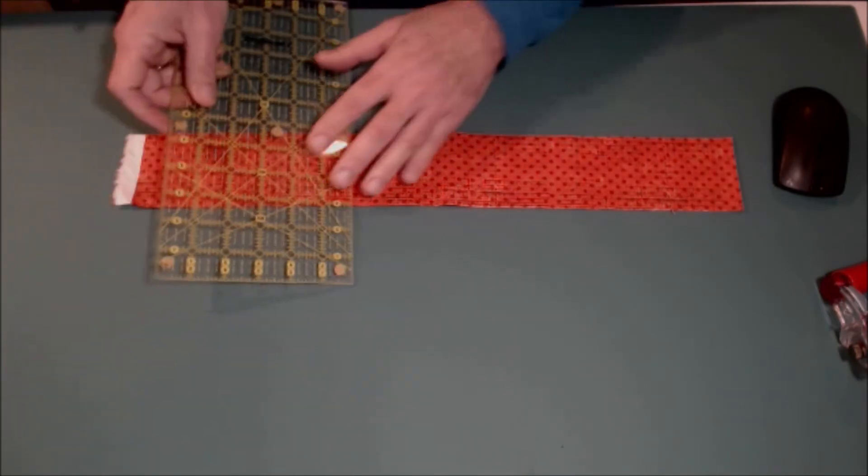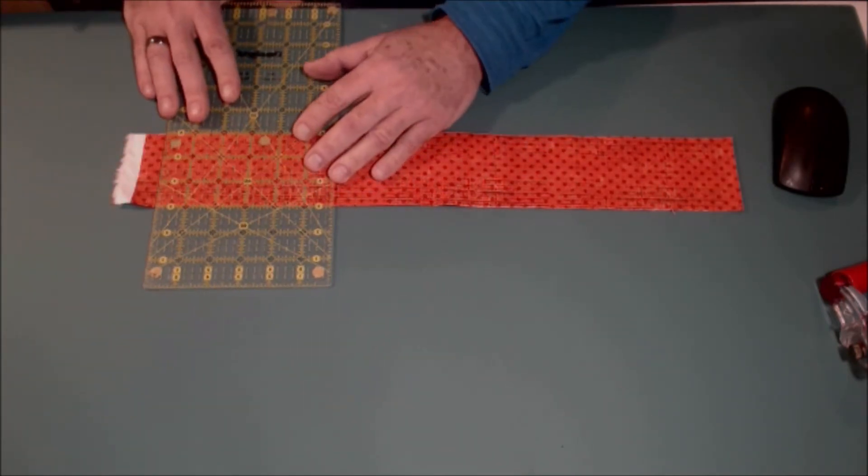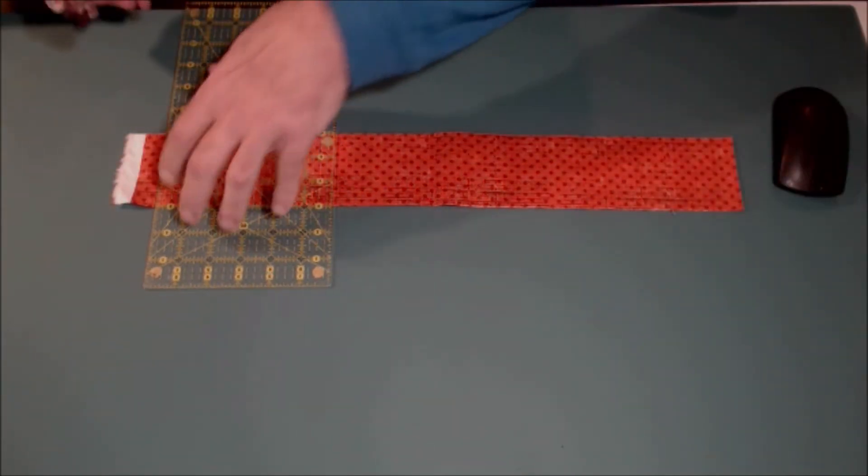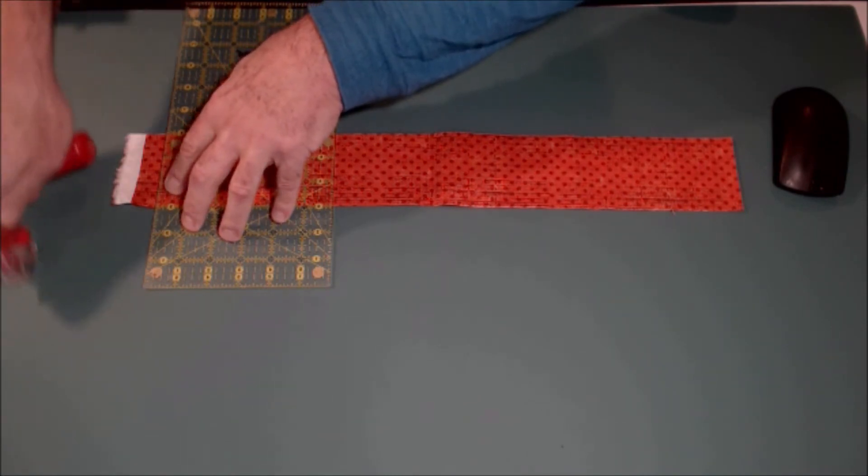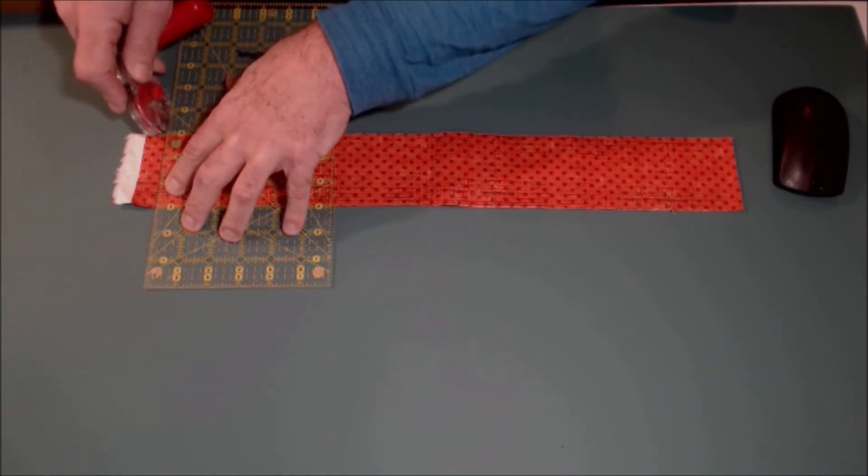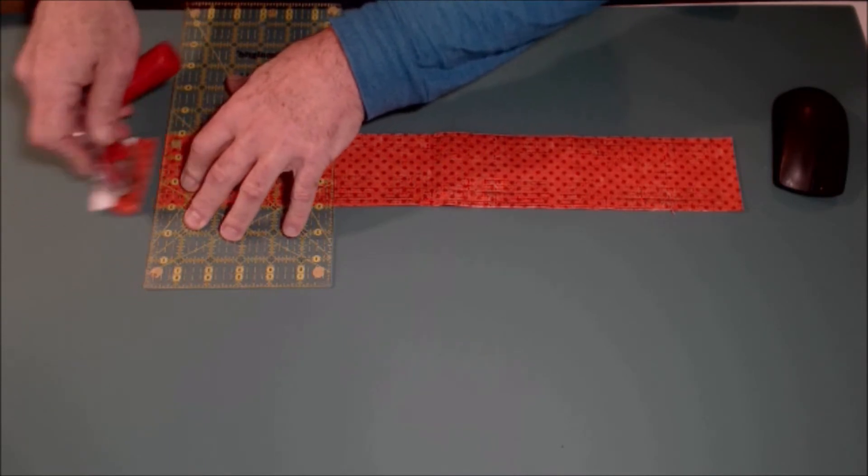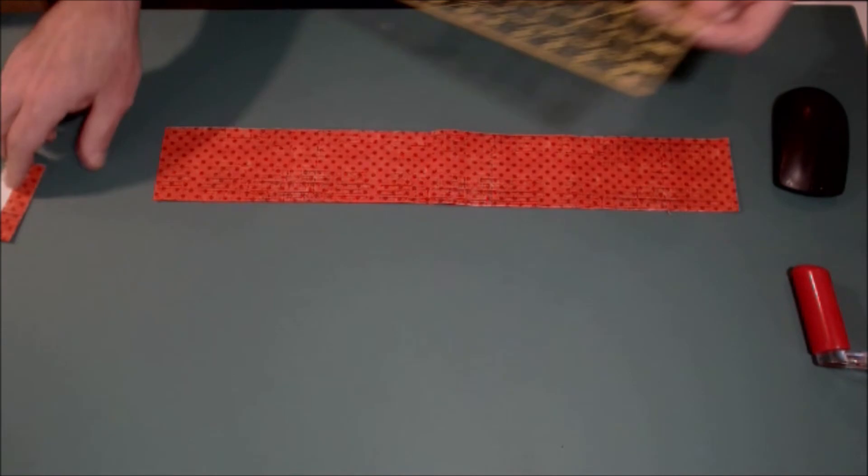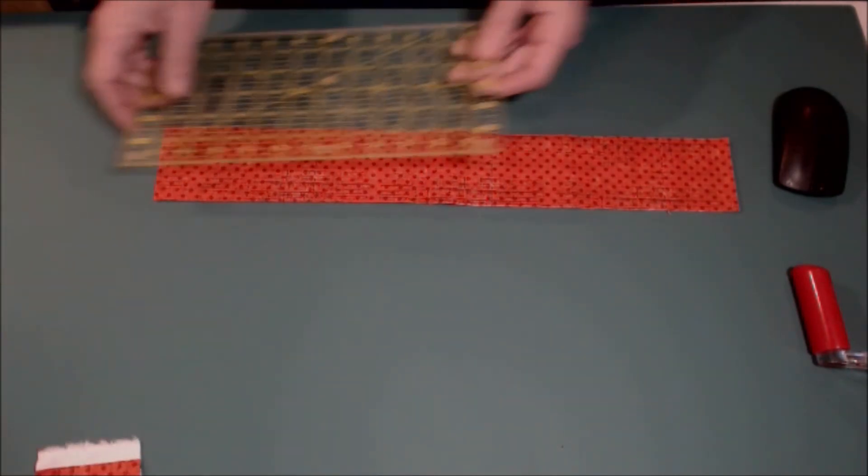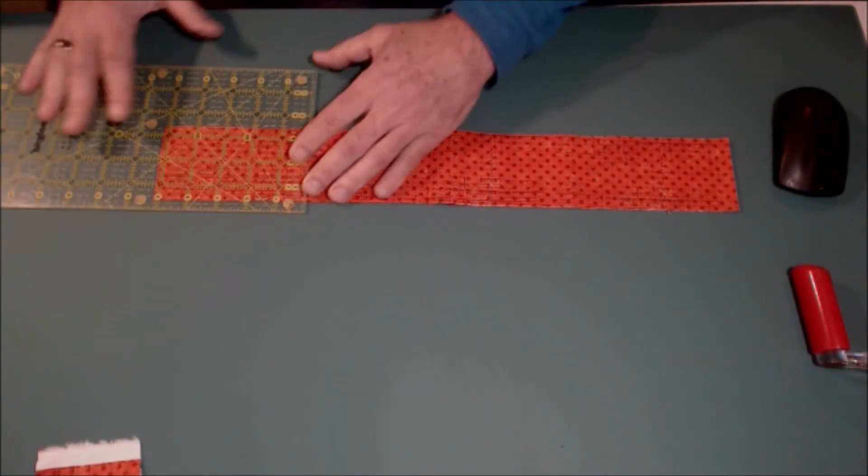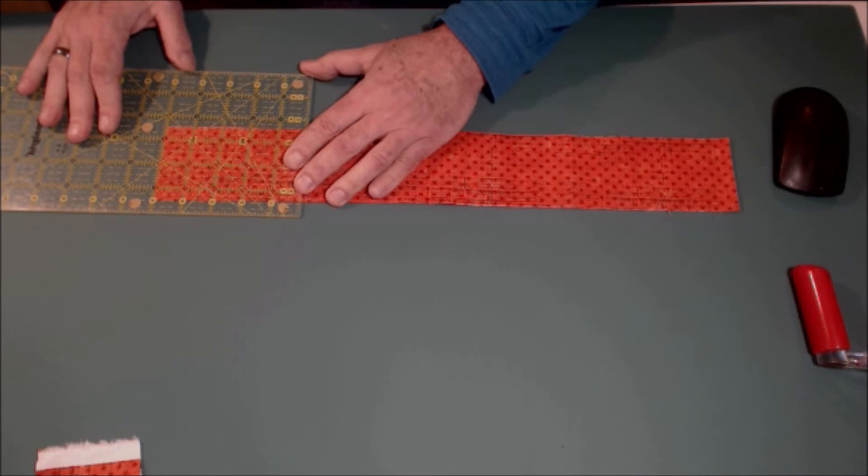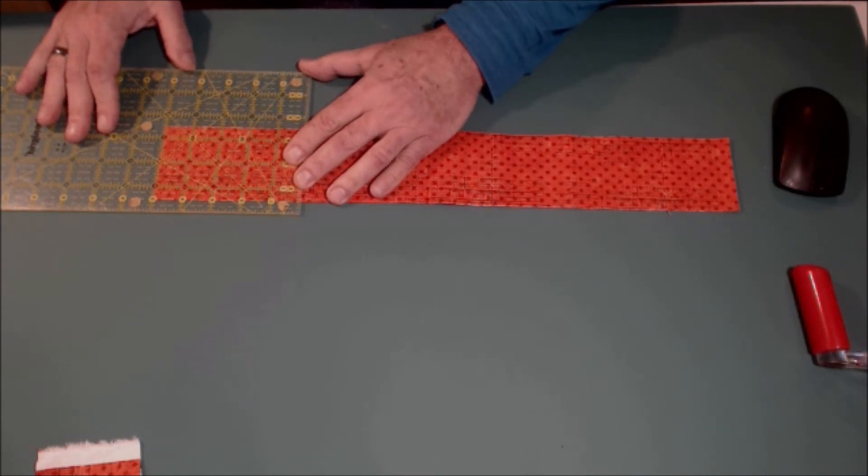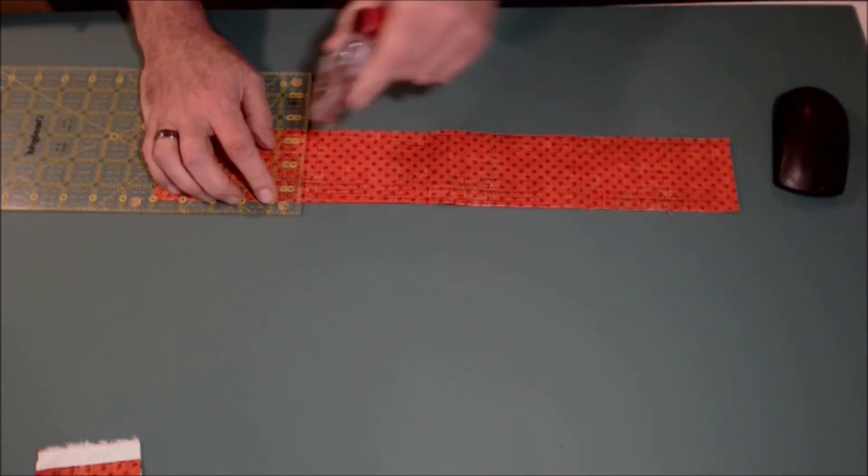I'm going to trim up this edge right here, get the selvedges off. And then I'm going to take this three-inch strip and cut it into five-inch rectangles. So I just put my ruler on five inches, and I cut it.